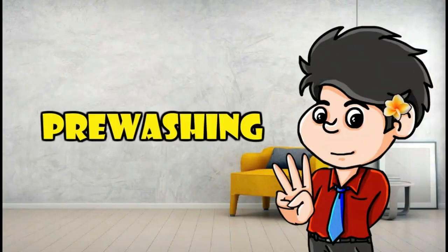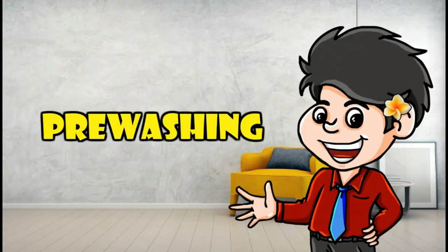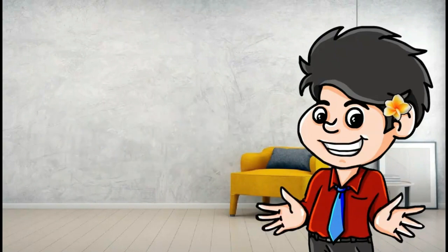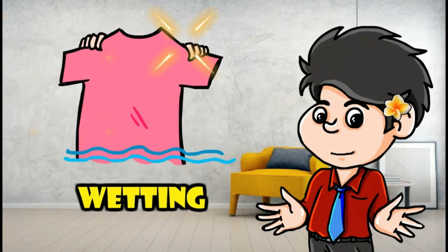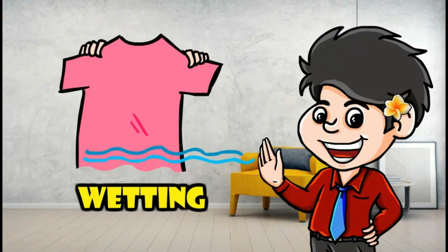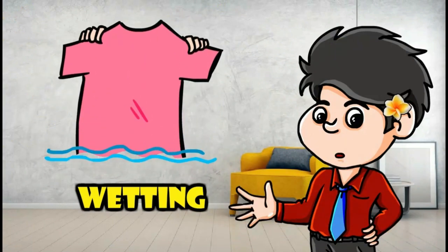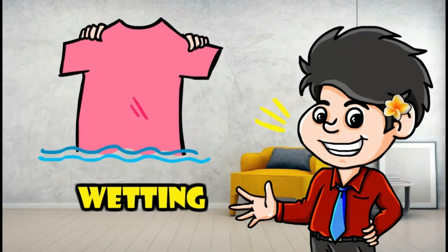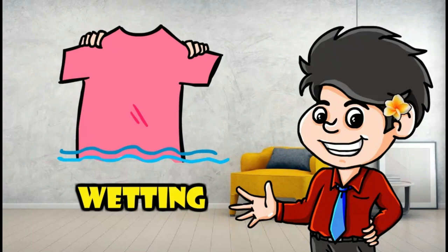Tahapan ketiga adalah pre-washing yaitu tahapan di mana sebelum kita melakukan pencucian di mesin cuci. Ada beberapa langkah-langkah yang harus dilakukan ketika pre-washing ini. Yang pertama adalah wetting, yaitu membasahi pakaian tersebut dengan cara mencelupkan atau merendam pakaian pada ember atau tempat lainnya.